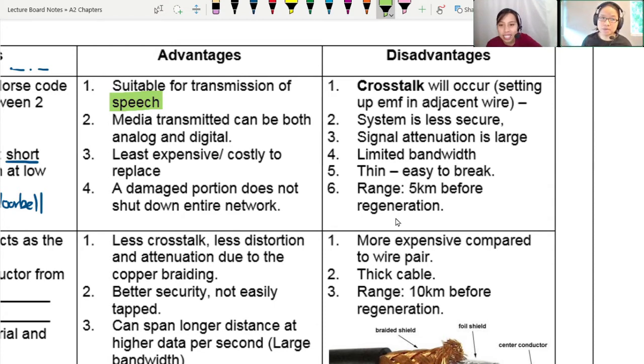Advantages for this is, it's generally quite suitable for transmission of speech. So right now, I'm not singing like an opera singer. I'm not playing a grand piano. So you don't really need to hear a range of frequencies. The media transmitted can be both analog or digital. Mostly it will be digital because we can filter out the sound. This is less, more cheaper. Not that expensive. And a damaged portion doesn't shut down an entire network. So this one is great because they're isolated.